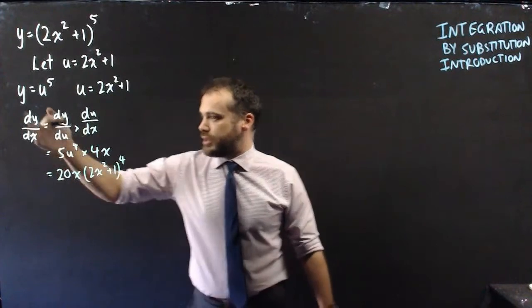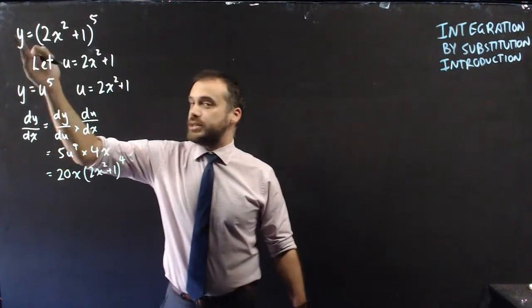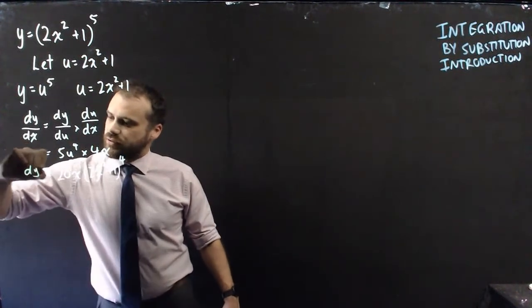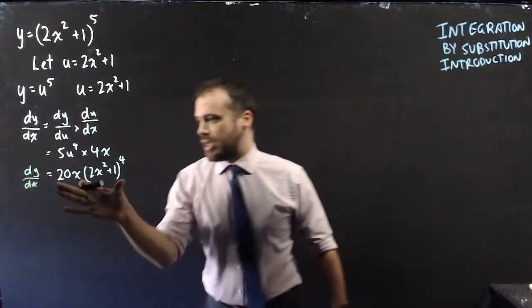We can put those together and put 2x² + 1 back in for u. What we're left with is the derivative of what we started with. So y equals (2x² + 1)^5, then the derivative of y with respect to x equals this thing here.